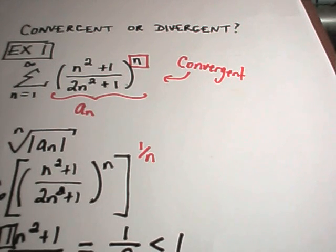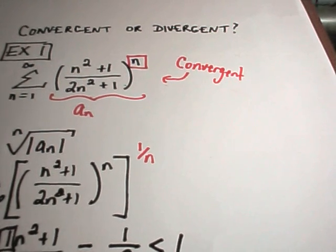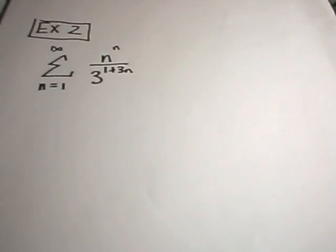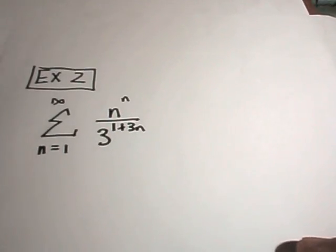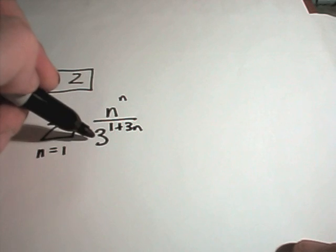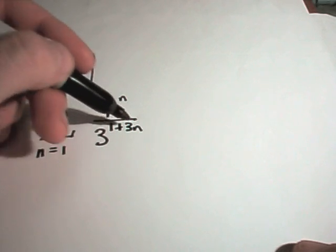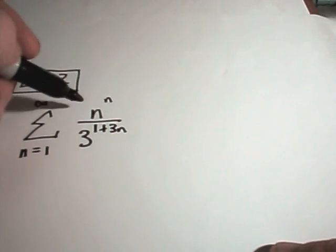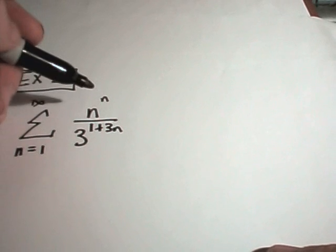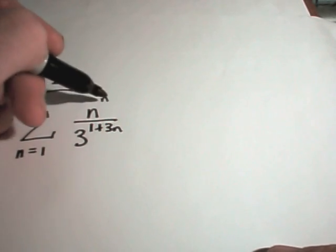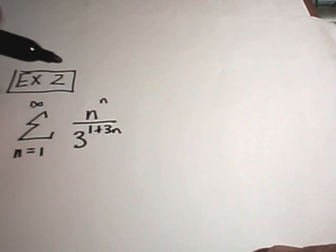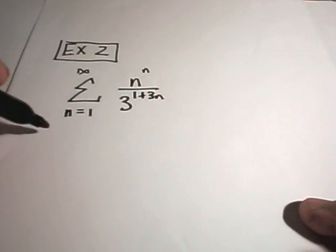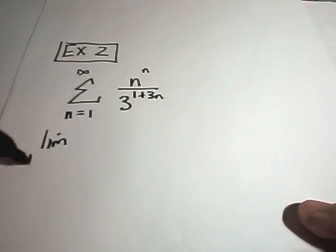Okay, so not so bad. Let's look at another one here. So in this problem, we've got a series. We've got n raised to the n power and then 3 raised to the 1 plus 3n. So same idea. Notice these powers of n floating around. You've got n to the n. You've got 3 raised to something involving the n power. So I'm going to use this root test.